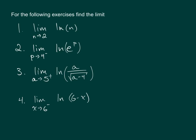That is because if you look at the argument, which is what's inside the log, when you take that and set it equal to 0 and solve for the variable, this ends up being the vertical asymptote.